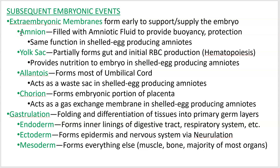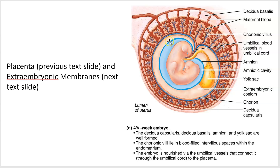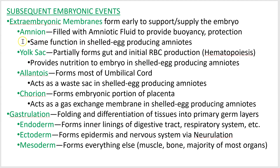The amnion is this water sac right here — it's a fluid-filled cavity with a membrane around it that provides buoyancy, so the baby can develop in a sort of zero-G atmosphere. It also prevents the embryo from sticking to the walls. So it provides shock absorption, buoyancy, and keeps you from sticking to the walls. That's the same exact function it has in a chicken egg — there's a little water sack around the baby chick that does the same thing.